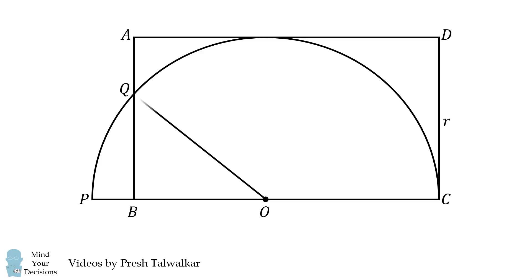We also have OQ is equal to R and OC is equal to R. Now suppose that the rectangle has another side length AD that's equal to X. That means BC also has a length equal to X and OB has a length of X minus R.